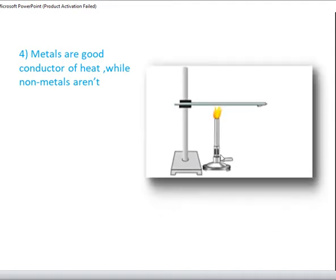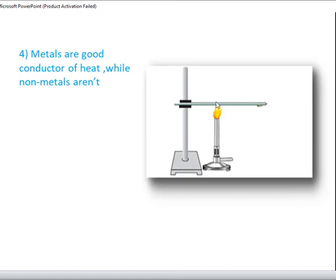Now I will bring a flame and rods of different elements, with wax stuck to them. I will find that the wax melts on the aluminium rod, iron rod and copper rod, but when the rod is made of carbon, sulfur or phosphorus, the wax won't melt. This is because metals are good conductors of heat — they transfer the heat — while non-metals are not good conductors of heat.